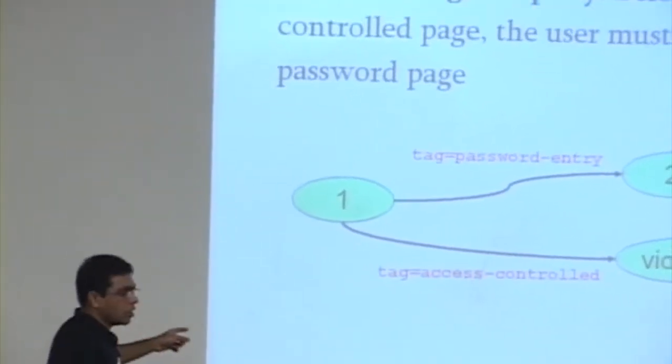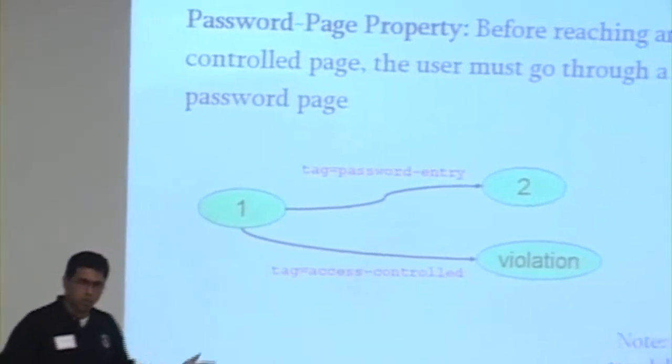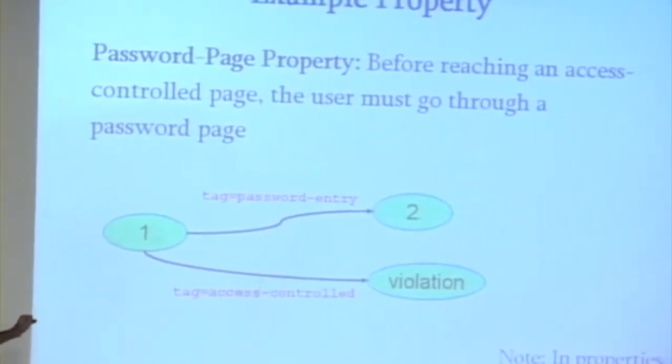The properties themselves are written as automata. This is traditional model checking. This is how it works. You write it as an automaton.